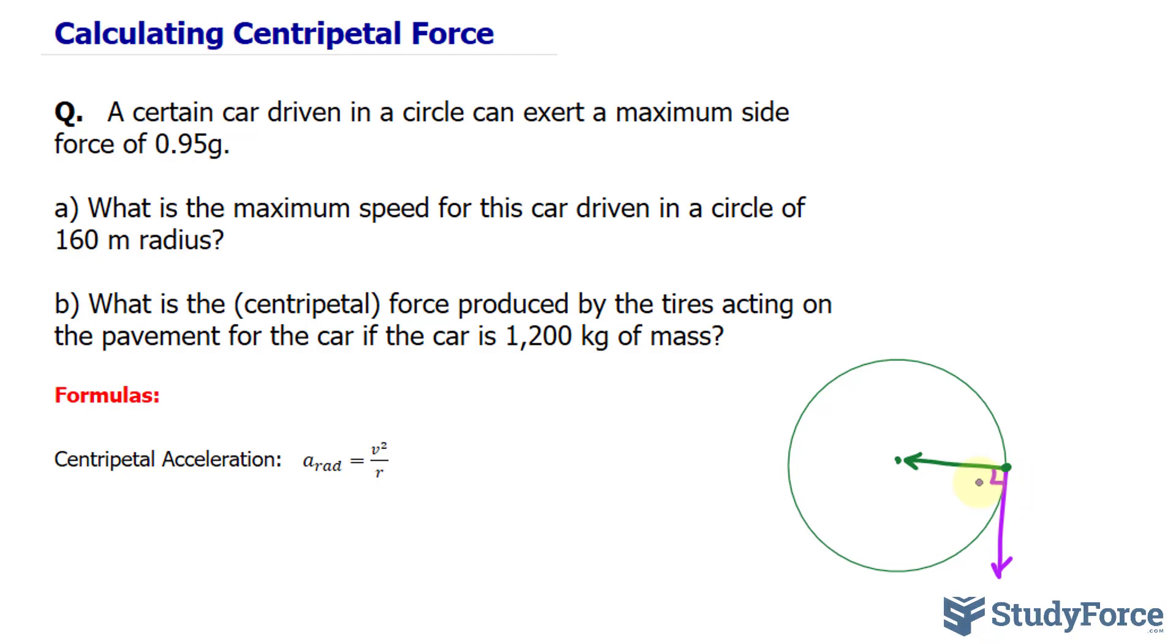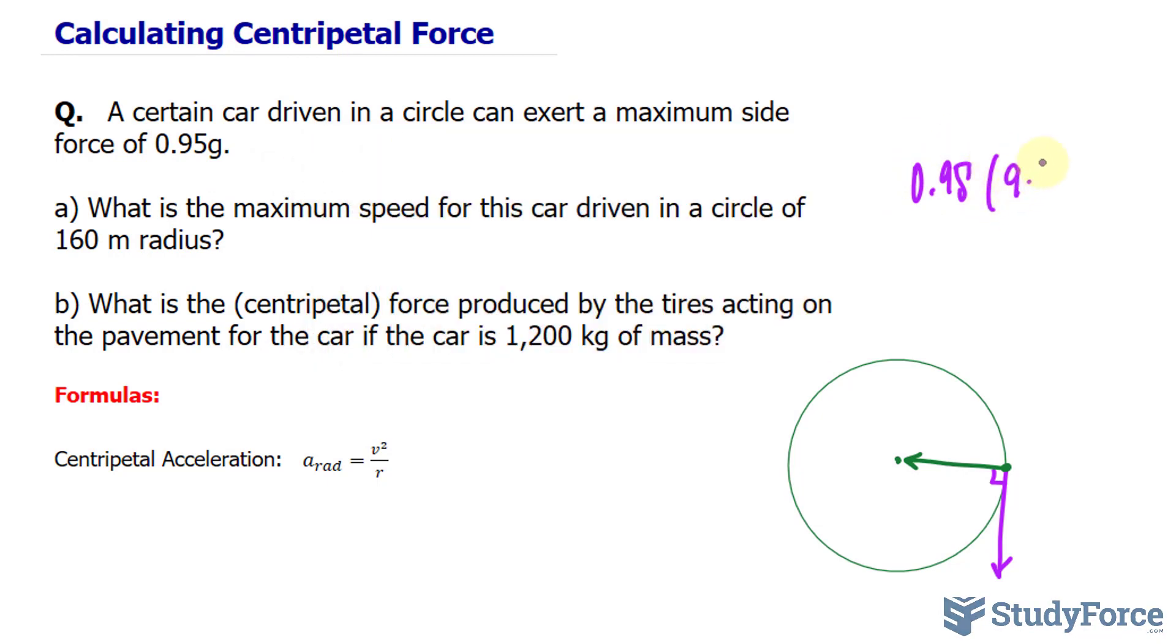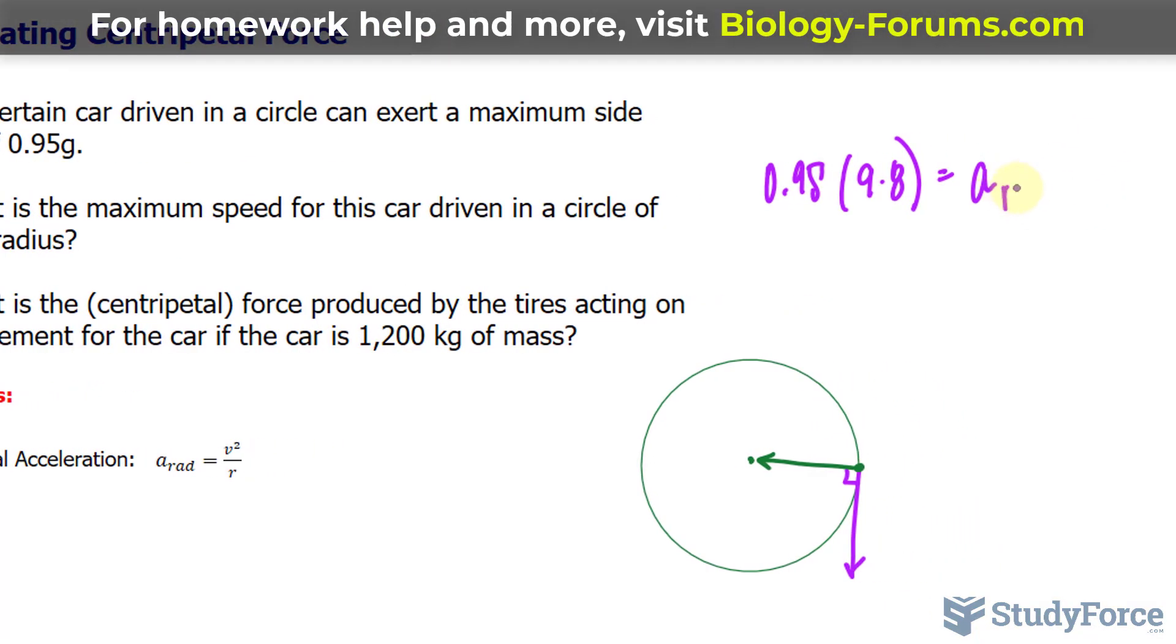Given what we're told in the question, to find out what this acceleration is, we take the side force of 0.95 and multiply by the acceleration due to gravity being 9.8. So this should give us a_rad.